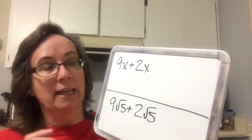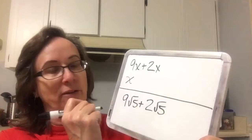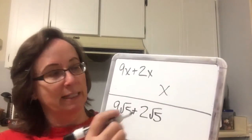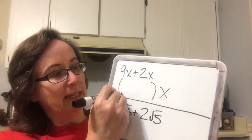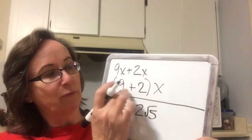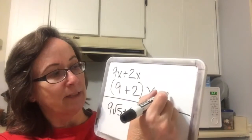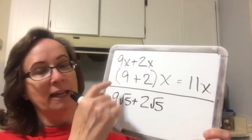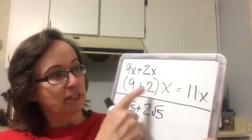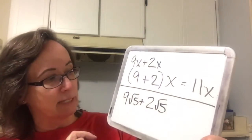The first problem they give us is one that doesn't have any radicals at all — it's just got variables — but they're showing you what like variable parts are. So, 9x plus 2x. The reason they can do this is because the x can be factored out. If we factor the x out, then we've got 9 plus 2, and 9 plus 2 is 11, so we get 11x.